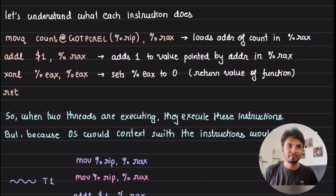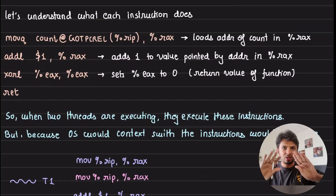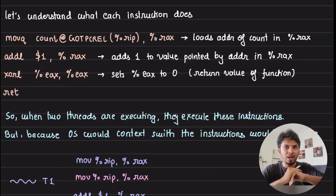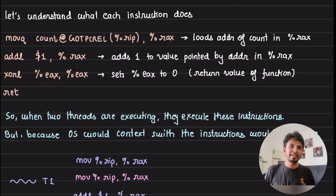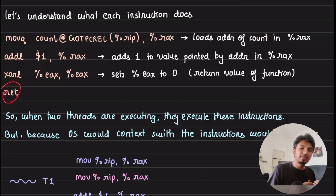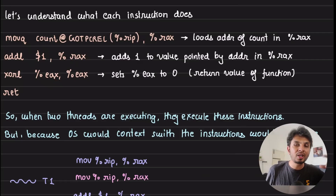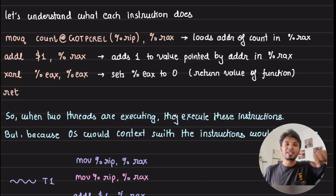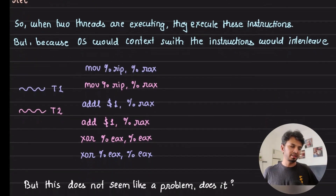Third: xorl %eax, %eax — when you XOR the same value with itself the output is zero, so this sets eax to zero. Fourth: ret — return. The return value of the main function is zero, which is why this is how it returns zero from there.